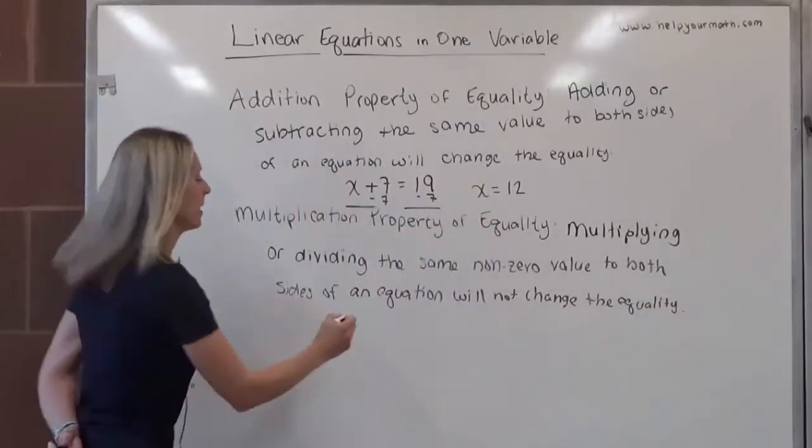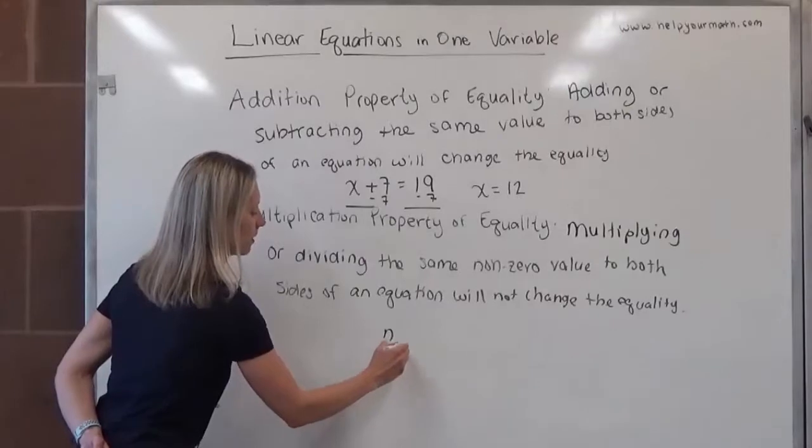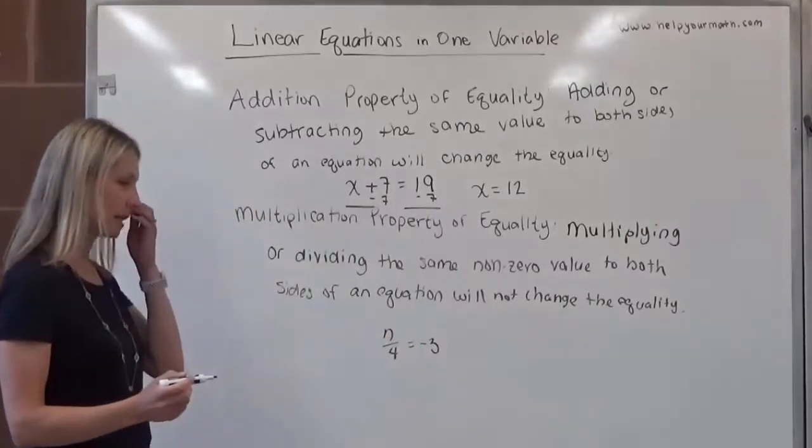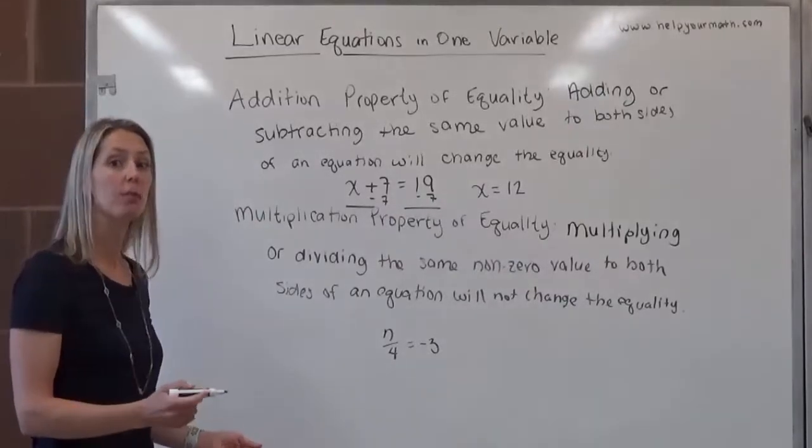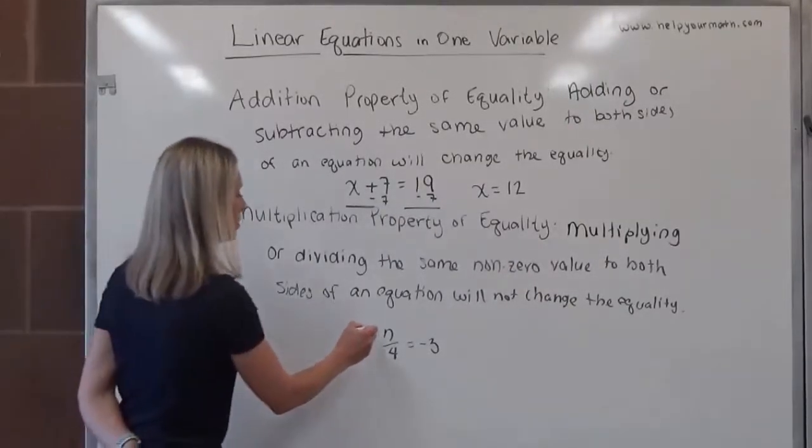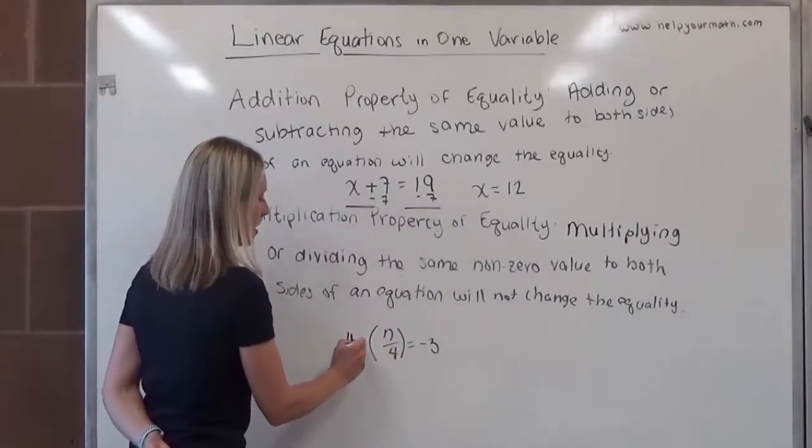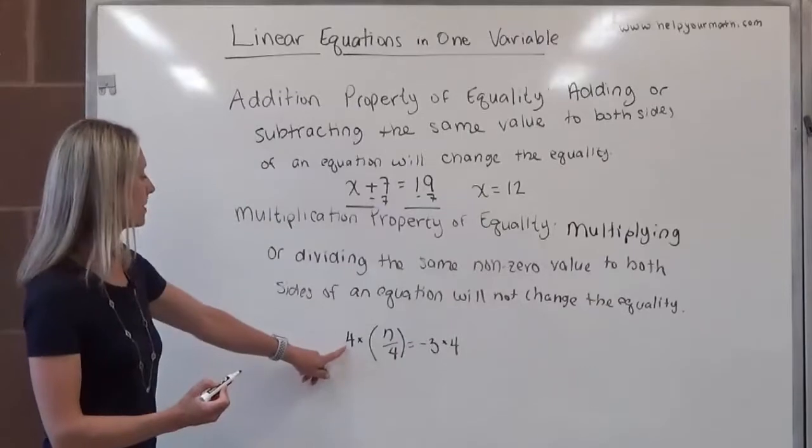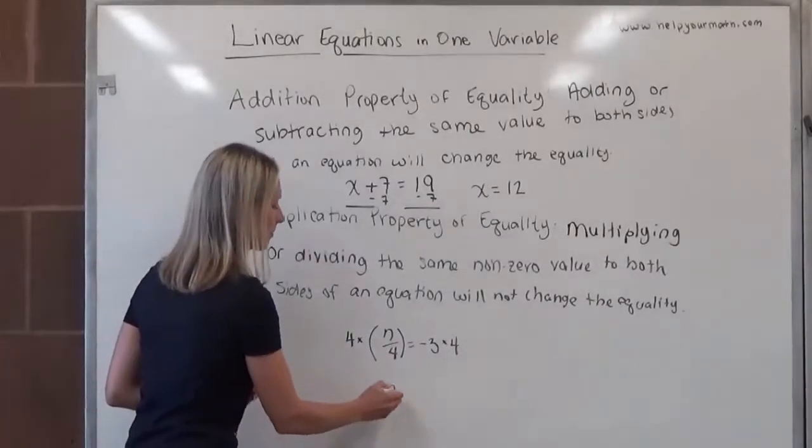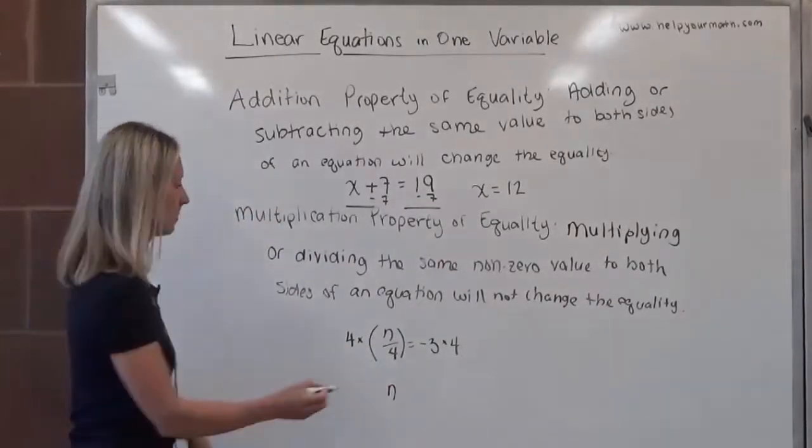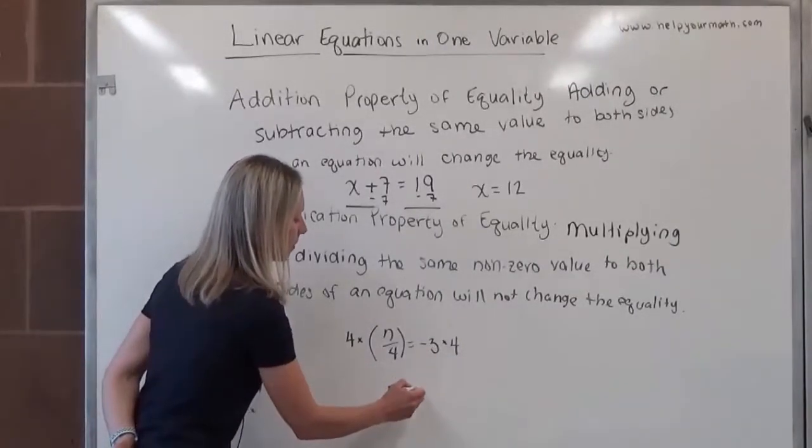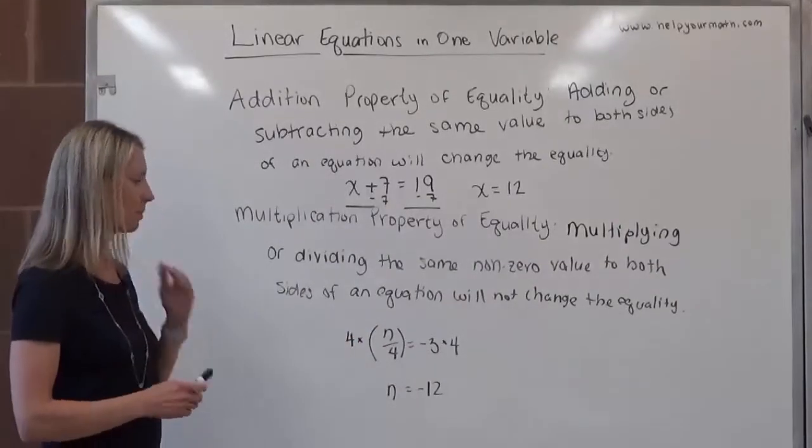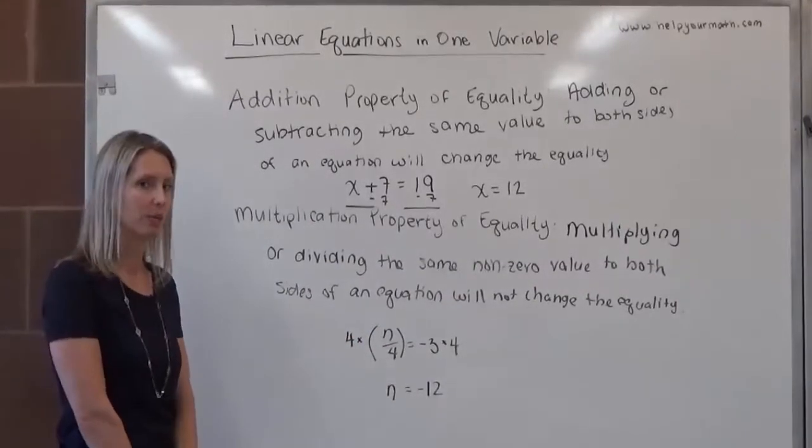So for example, if we have n over 4 is equal to negative 3, and we want to get n by itself, n is being divided by 4. To undo division of 4, we would want to multiply by 4. We multiply the entire left-hand side by 4, and the entire right-hand side by 4. The 4 times 4 and then divide by 4 cancel each other out, so we would be left with n or 1n, which is the same as n, and negative 3 times 4 is negative 12. So again here, n divided by 4 equals negative 3, and n equals negative 12, those are equivalent equations.